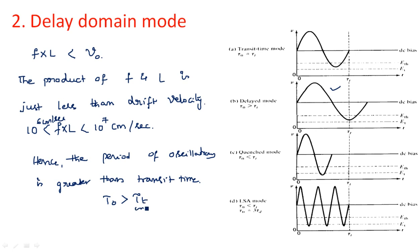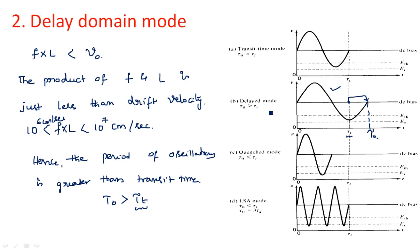Since τ₀ is greater than τ_t, the signal has not completed within the standard transit time — it is taking up to a later point. The delay is increased on the time axis. Observing the waveform, the delay is much more increased compared to the transit time domain mode — that is why it is called delay domain mode.